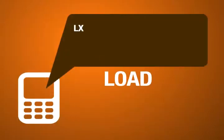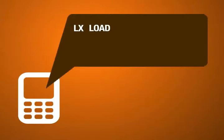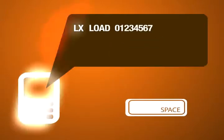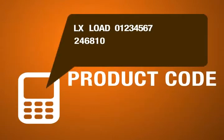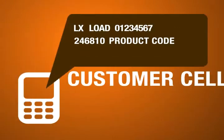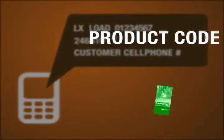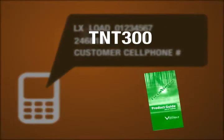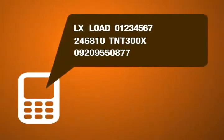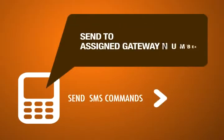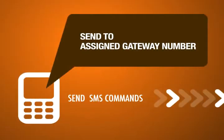To buy or sell load, just type: LX, Load, Your ID Number, Your PIK, Product Code, Customer's Cell Phone Number. Product codes can be found on your product guide or price list brochures. Make sure that all the information you entered are correct, particularly the product code and the customer's cell phone number. Then send the SMS command to your assigned gateway.